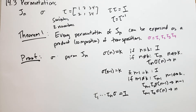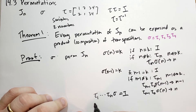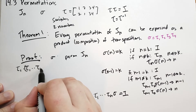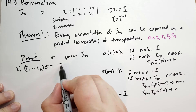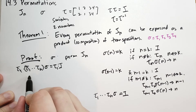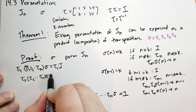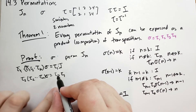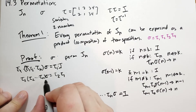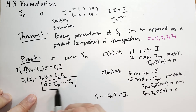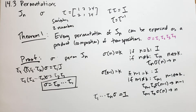We can rewrite this by applying compositions to both sides. If we do a left-wise multiply by tau_1 on both sides: tau_1 times tau_1 cancels to the identity, leaving tau_2 through tau_n of sigma. We keep multiplying both sides by successive taus — tau_2 times tau_2 cancels, and so on — and eventually we get sigma is equal to tau_n composed all the way to tau_1. So we have expressed sigma as a series of transpositions applied to each other.